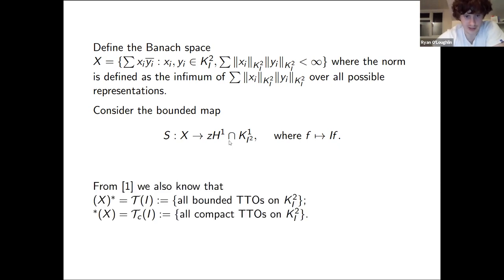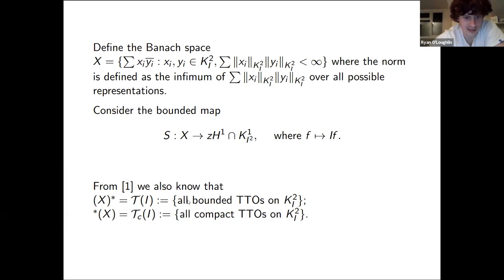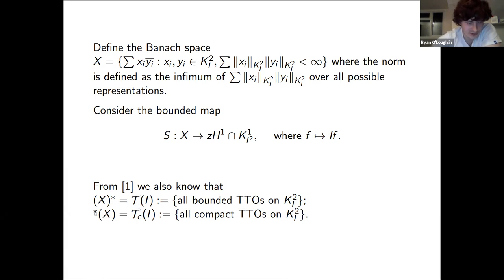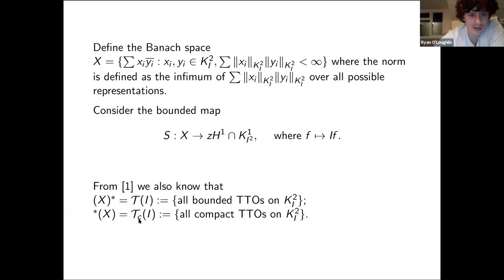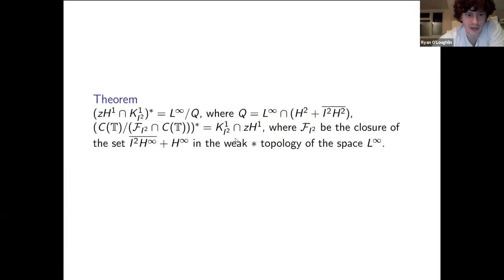Consider the bounded map S from X to the model space with exponent p=1 and inner function I^2, intersected with the shifted Hardy space, where S sends f to If — multiplication by I. I want to find the adjoint and pre-adjoint of S. Previous known results identify the dual space of X as all bounded TTOs on the model space, denoted T(I), and the pre-dual of X as all compact TTOs, denoted T_c(I). The dual and pre-dual of the codomain can also be described using quotient spaces of bounded and continuous functions.